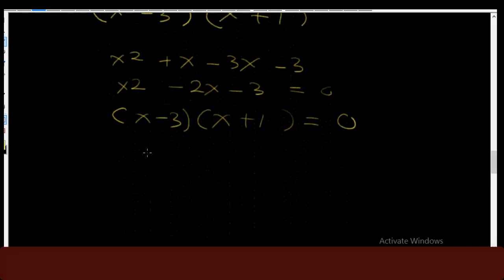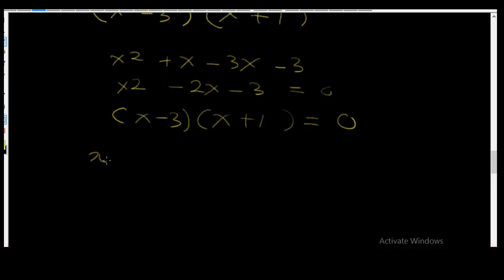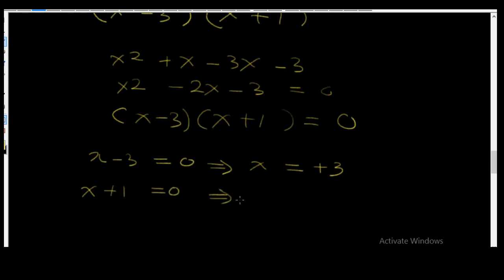Each of these brackets can be equated to zero. So x - 3 = 0, therefore x = +3. Also x + 1 = 0, therefore x = -1. So x is either equal to +3 or -1. It cannot be both at the same time. That is our final answer.